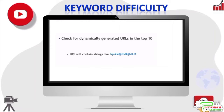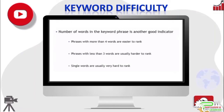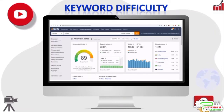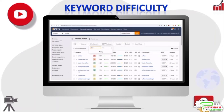The number of words in a keyword phrase is another good indicator of keyword difficulty. Generally, keyword phrases with more than four words are easier to rank, while keyword phrases with less than three words are harder to rank. The hardest to rank for are single words — not just because the competition tends to be very high, but also because the search intent for a single word is not always obvious. If you are using ahrefs you can get the tool to list all keywords that meet any word count criteria using the word count filter in keyword explorer.